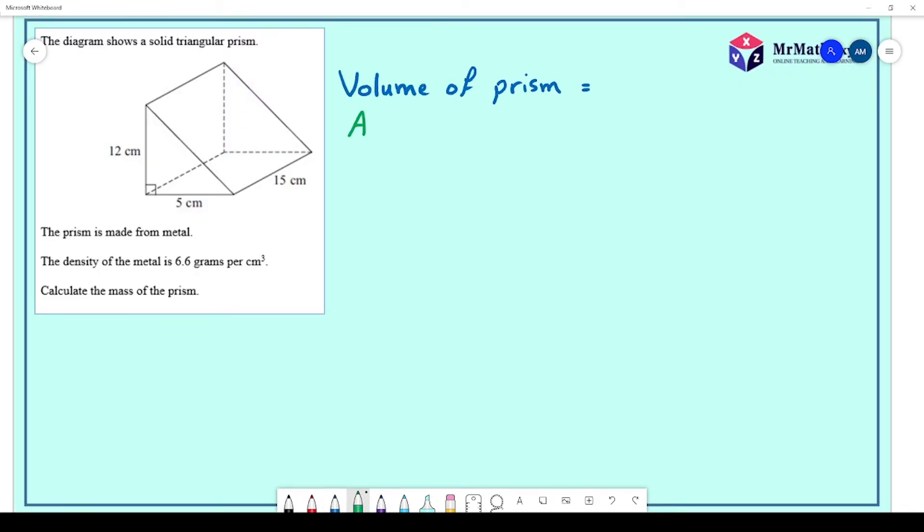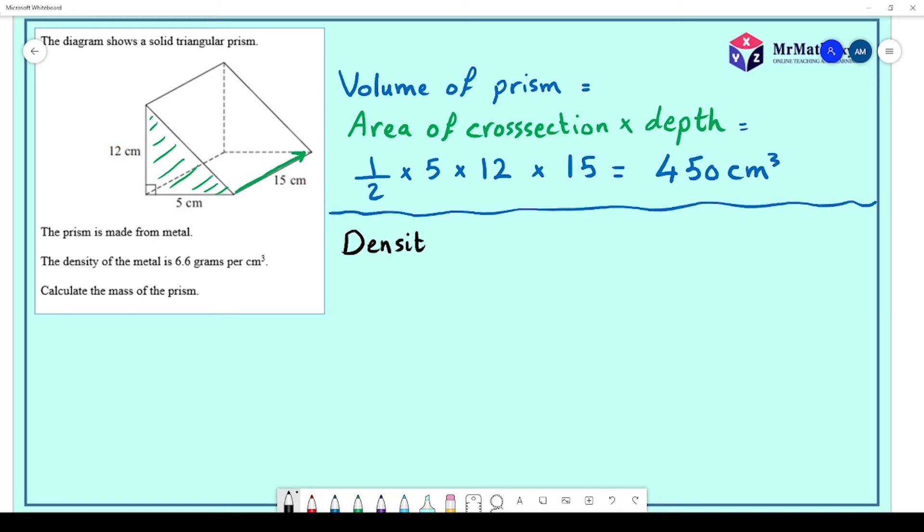First, I find the volume of the prism by multiplying the area of the cross section, which is the triangle, times the depth, and we'll get a volume of 450 centimeter cubed.